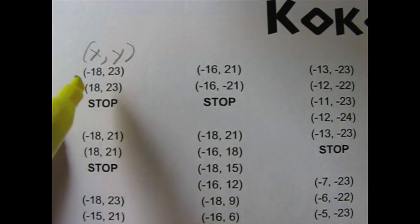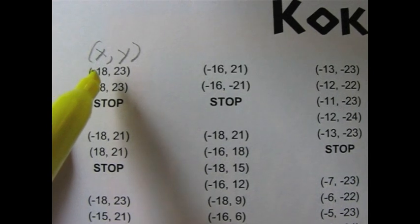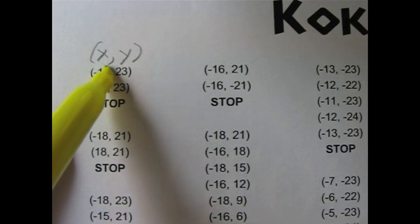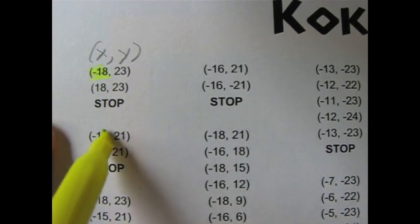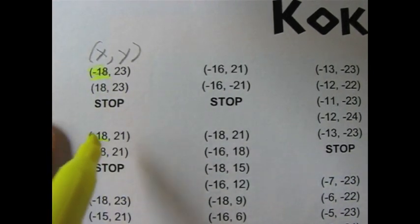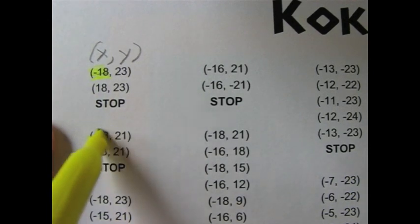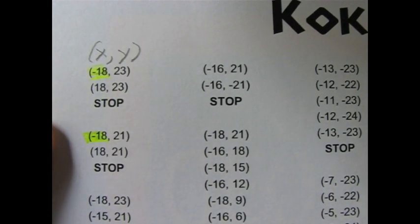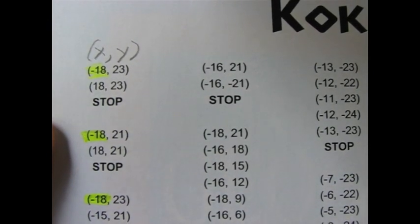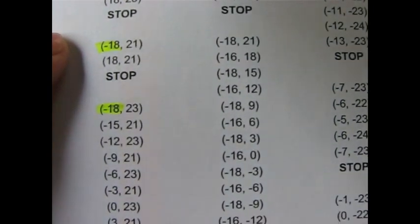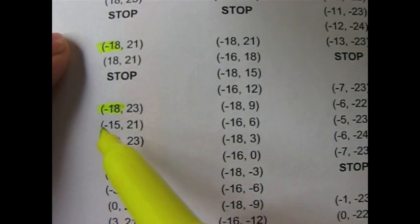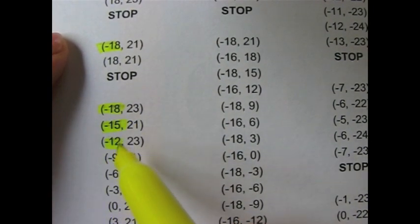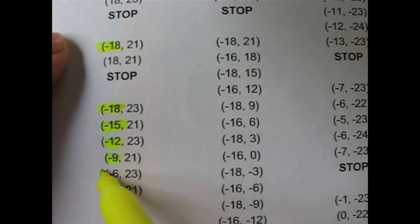For the first few designs, highlighting all negative coordinates is good to do. Begin with the x-coordinates. Using a highlighter, highlight only the x-coordinate if it is a negative number. Remember to ignore the second number for now.